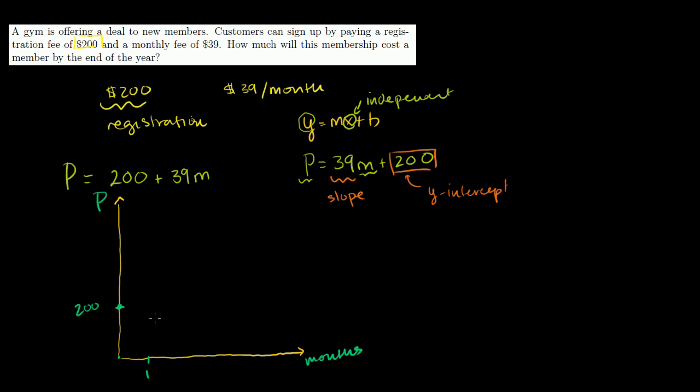So after one month, how much are we going to have to pay? Well, our slope is 39. So if we move one month forward, we're going to go up by 39. So this will, right here, that will be 239. And if we go another month, it'll be 278. This is kind of a weird labeling of an axis, but I think you get the idea. So the graph of how much it'll cost us per month will look something like this.